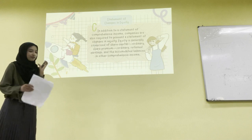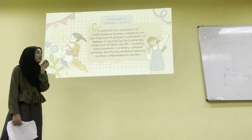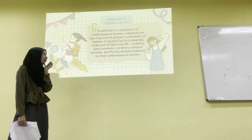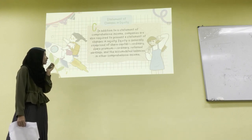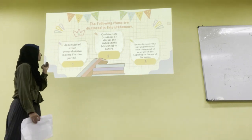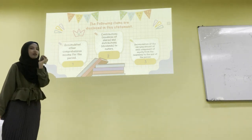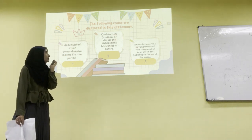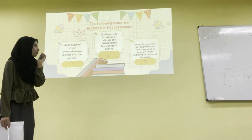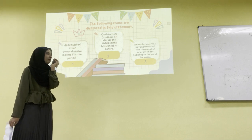In addition to a statement of comprehensive income, companies are also required to present a statement of changes in equity. Equity generally comprises share capital ordinary, share premium ordinary, retained earnings, and the accumulated balances in other comprehensive income. The following items are disclosed in this statement: accumulated other comprehensive income for the period; contributions or issuances of shares and distributions or dividends to owners; and reconciliation of the carrying amount of each component of equity from the beginning to the end of the period.